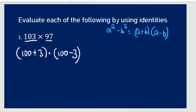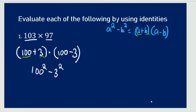So now here, in this formula and in this expression, A is equal to 100 and B is equal to 3. So now just solve it. It would be 100 squared minus 3 squared. 100 squared is going to be 10,000. Then 10,000 minus 3 squared, which is 9. And when we subtract that, we would get 9,991. And so that's going to be our answer.